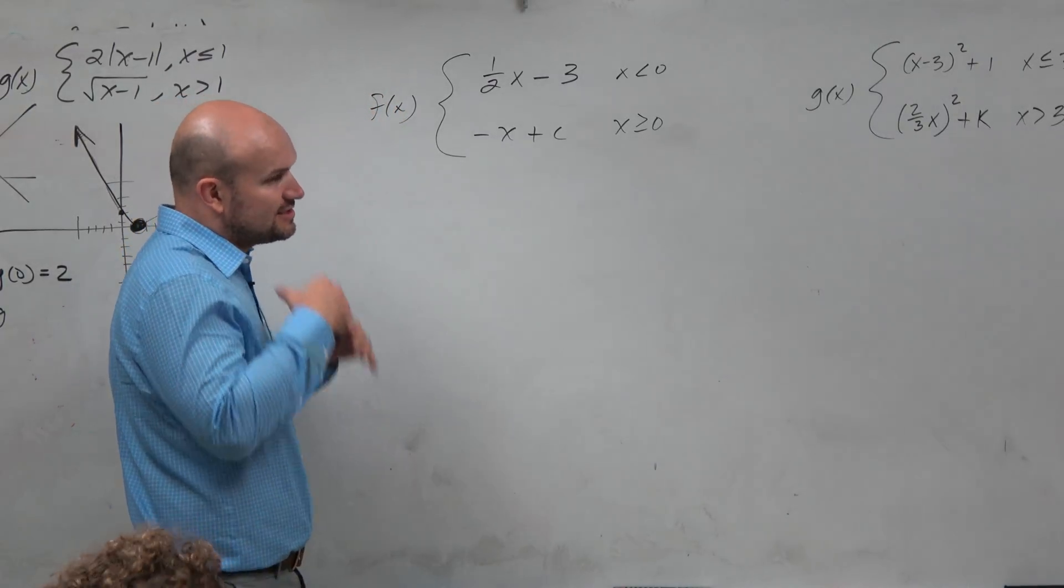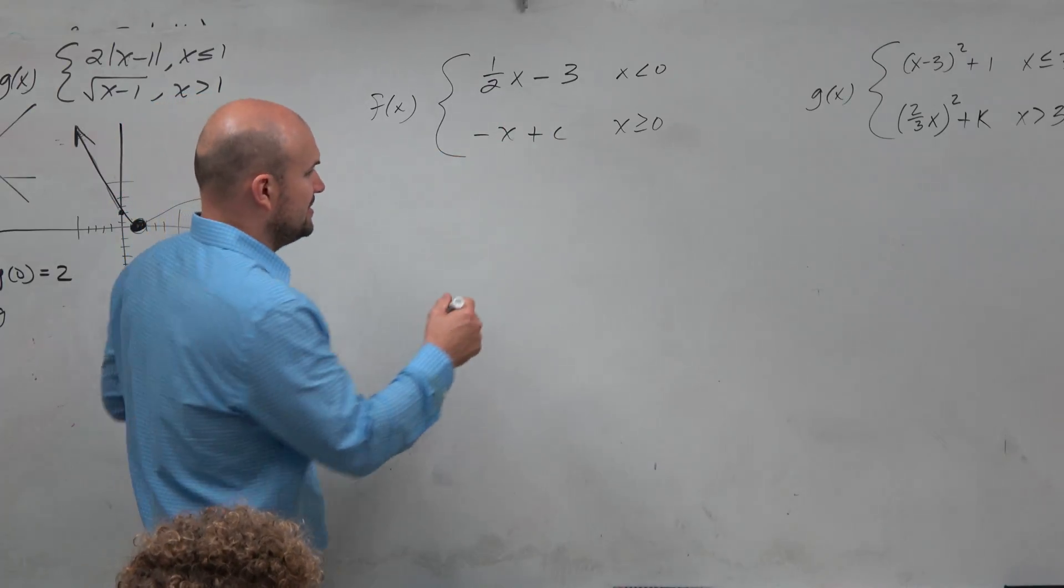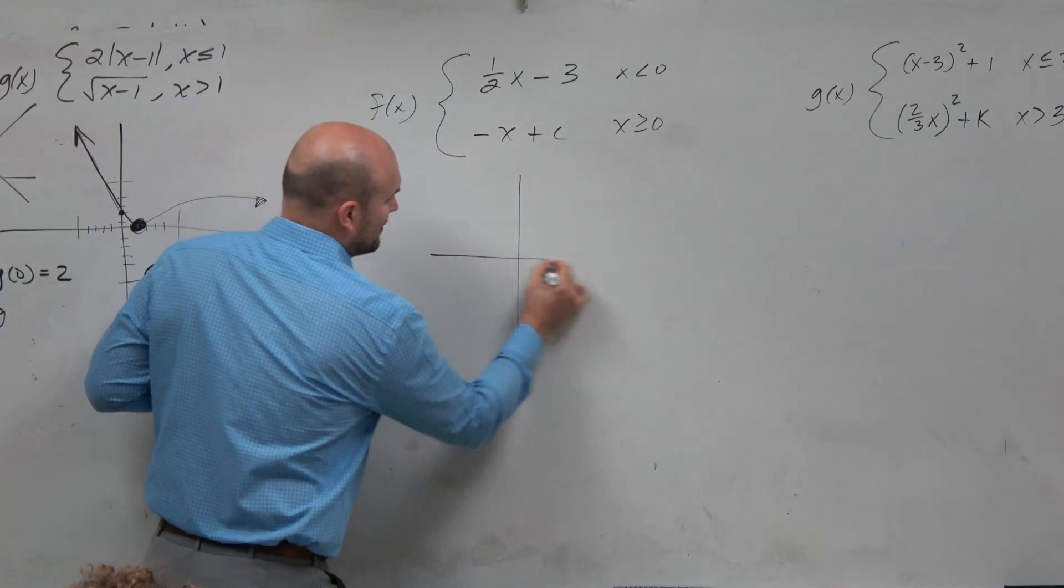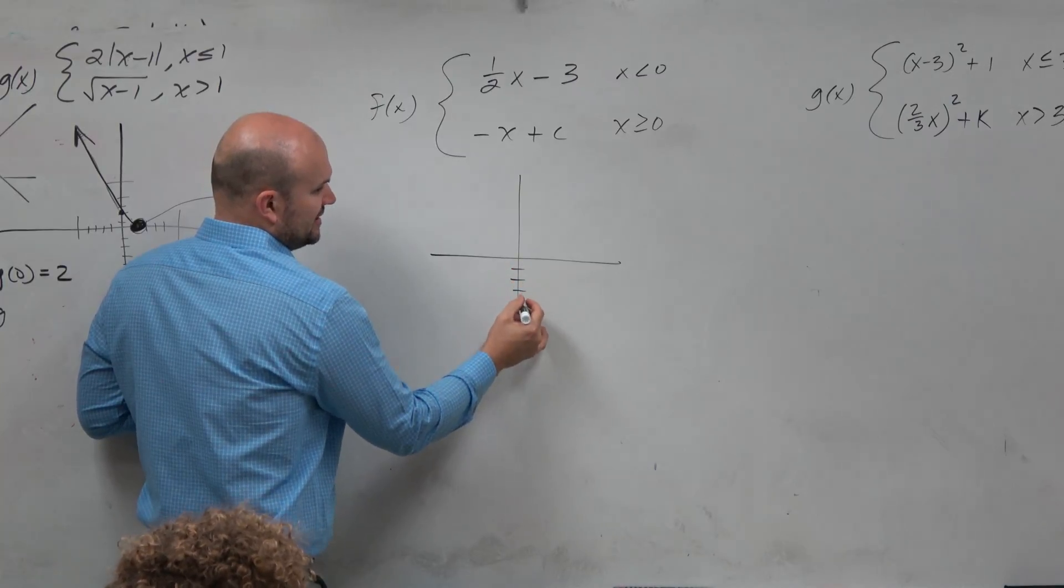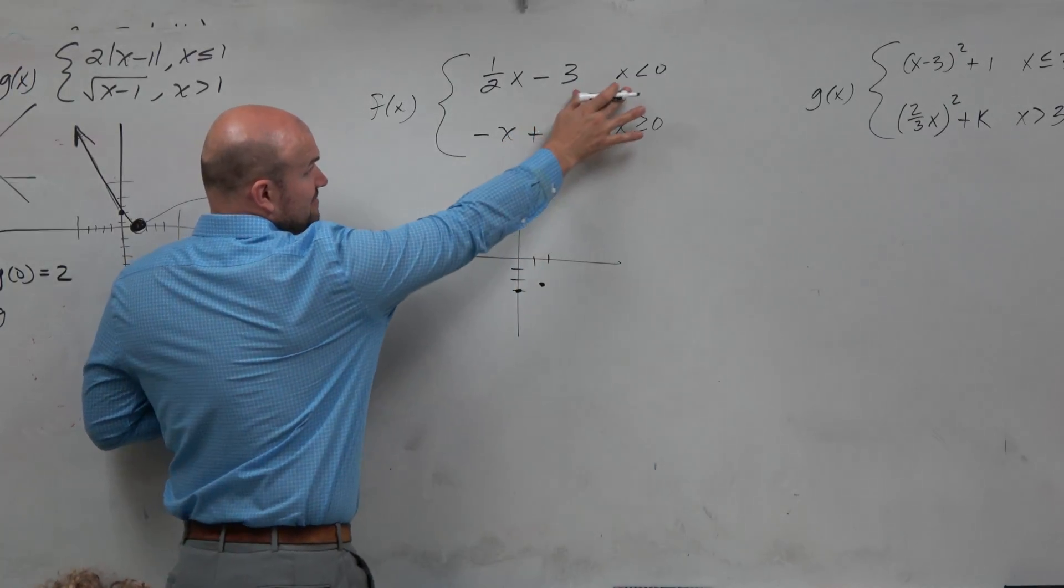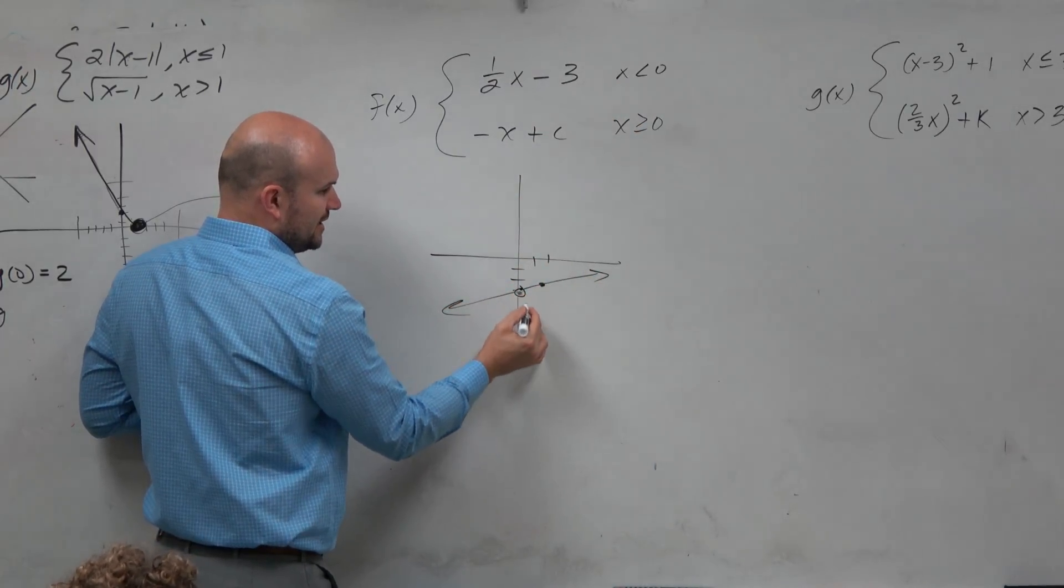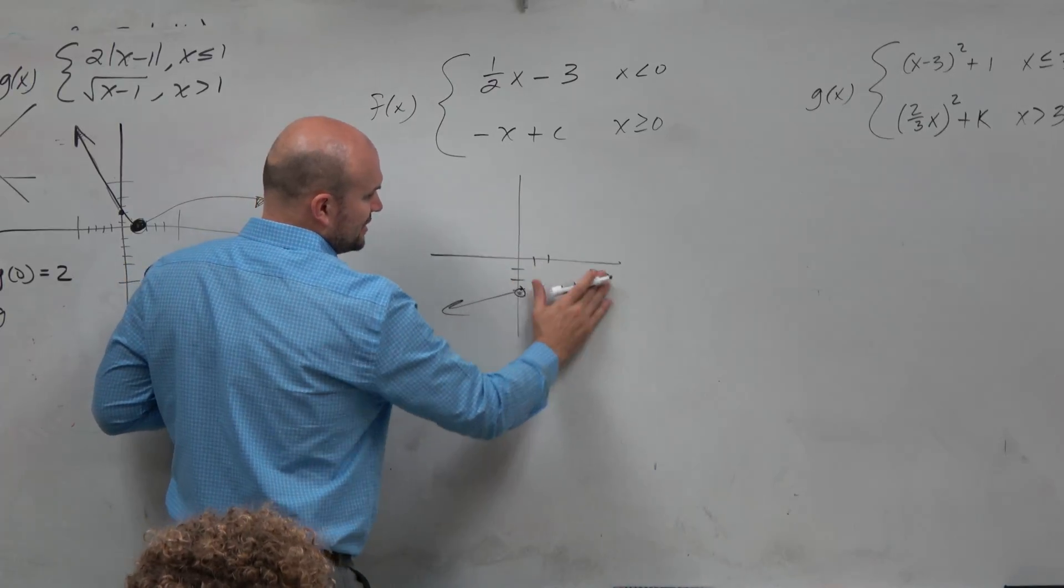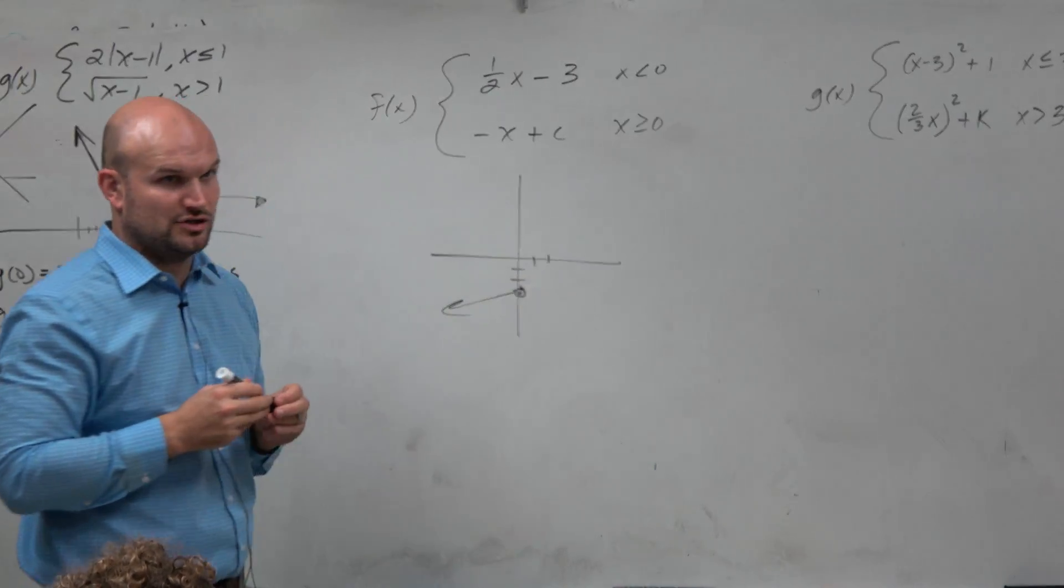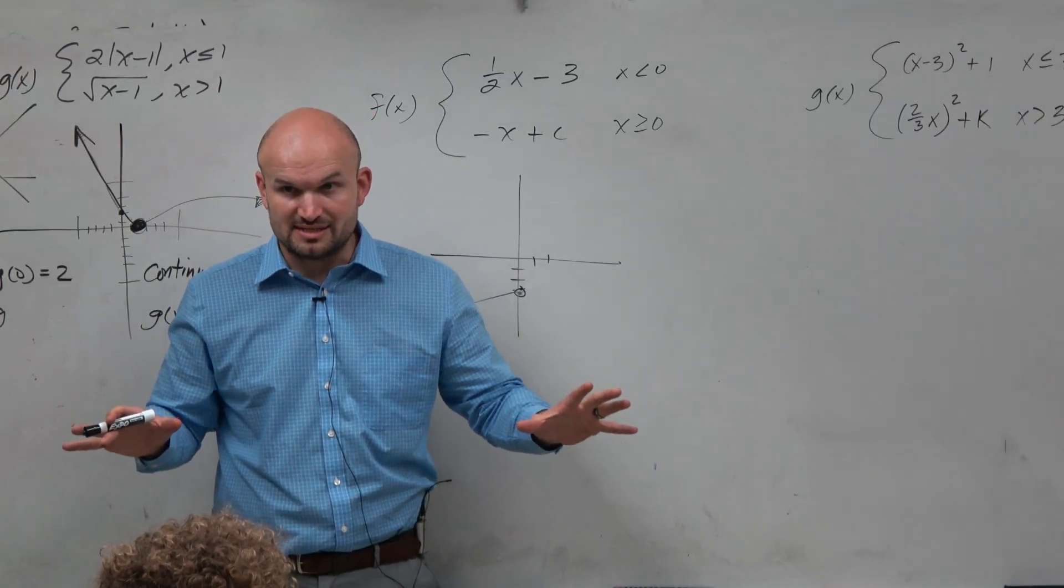The main thing is, to wrap our head around this, let's just graph 1/2 x minus 3. We can graph that: 1, 2, 3, up 1 over 2. And that's going to be for all values that are less than 0. So if we graph that line, it's going to be an open circle here, and then all less than 0. We're not going to graph the positive version. Are we okay at least with that? That's what we started with in the last class.